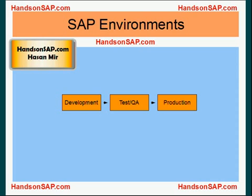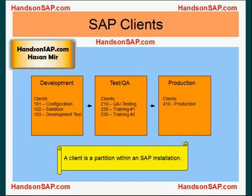We already know that there are three environments in a company: development, test and QA, and production. We already know the concept of a client. A client is a partition within an SAP environment. You can have multiple clients and data is going to be protected within a client. If you're connected to client 1, you cannot see data sitting in client 2. One client basically represents a company, but the same concept is used to create partitions within one environment. So a client is a partition within an SAP installation.